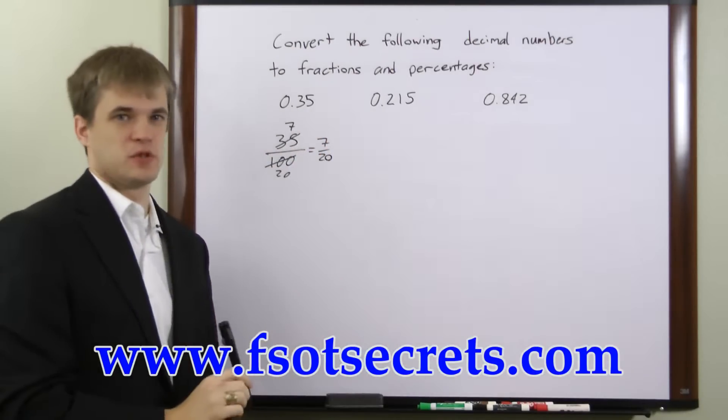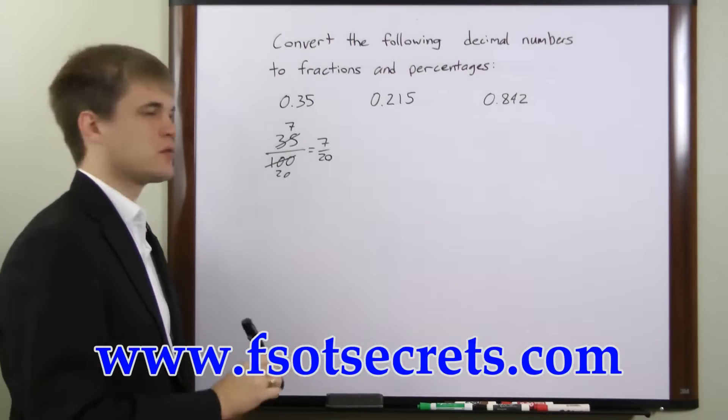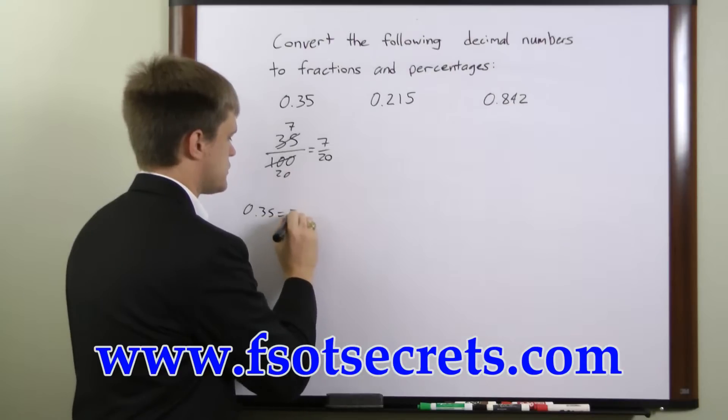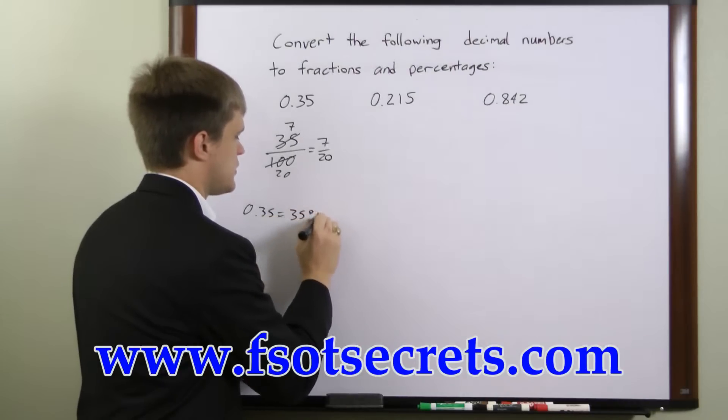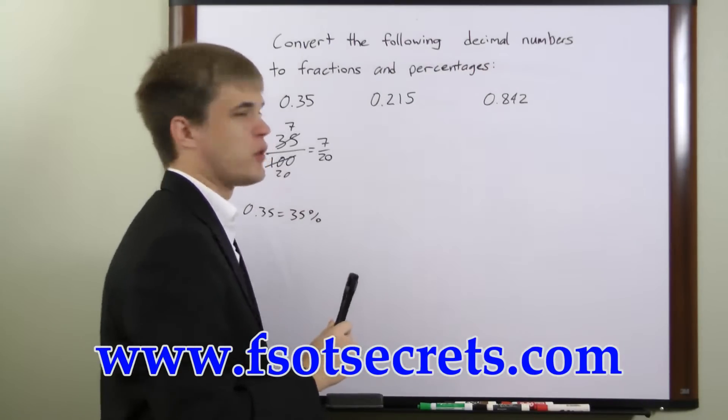To convert a decimal to a percentage, all we have to do is move the decimal point two places to the right, so 0.35 is equal to 35%. In the second example we have 0.215.